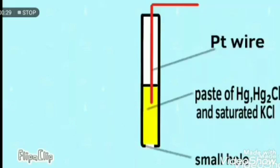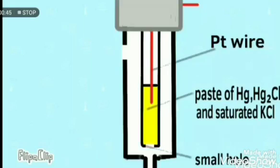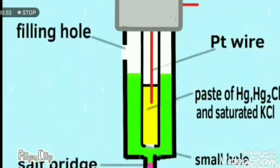As we can see, there is a platinum wire which carries the mercury. Since mercury is a liquid, the platinum wire is immersed in a paste of Hg, Hg2Cl2, and saturated KCl. These are all contained in a glass vessel filled with saturated KCl and has a hole to allow drainage through a porous plug, which acts as a salt bridge.